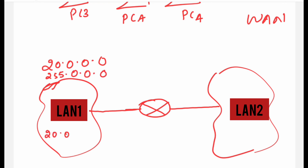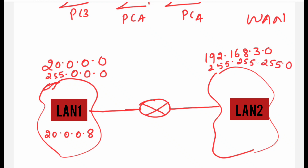Assume one of the PCs has address 20.0.0.8 and it wants to communicate with a PC in the other LAN. The network address for the other LAN is 192.168.3.0 and the subnet mask is 255.255.255.0. Both LANs have different network addresses — 20.0.0.0 is a class A address and 192.168.3.0 is a class C address. The destination PC's IP address is 192.168.3.6.